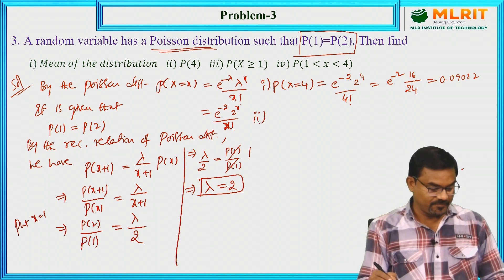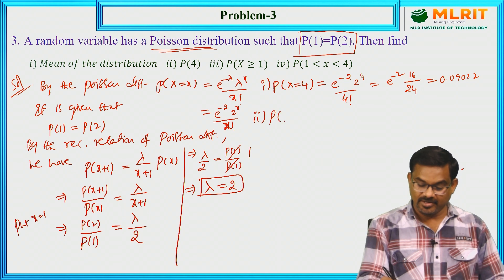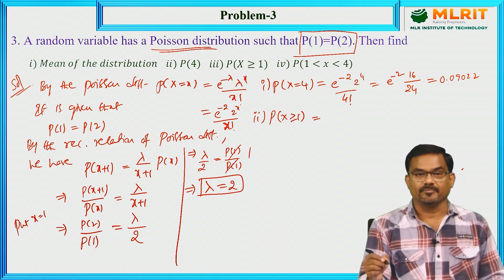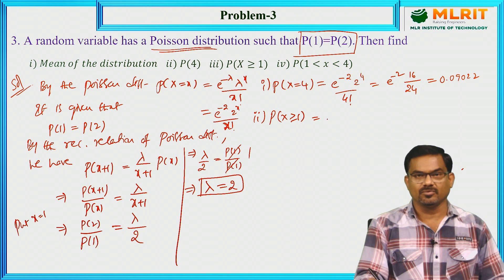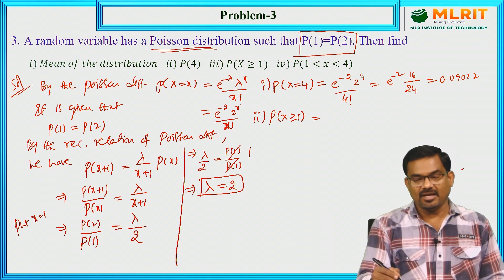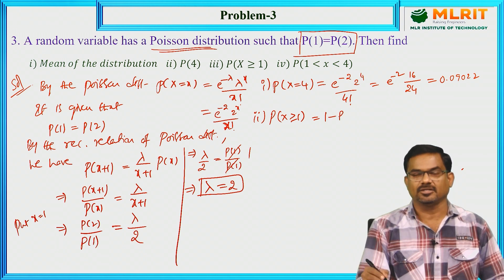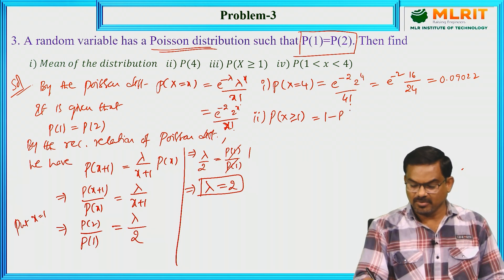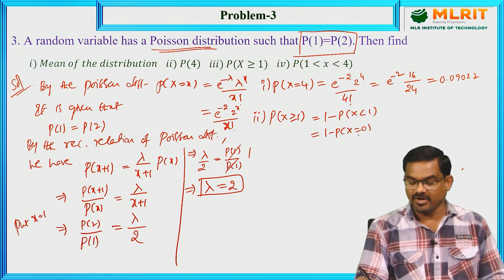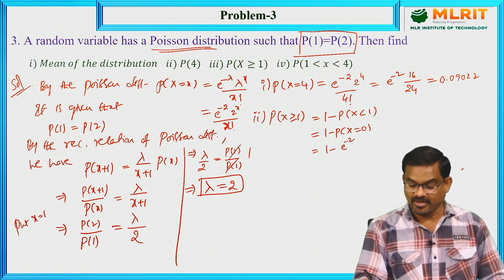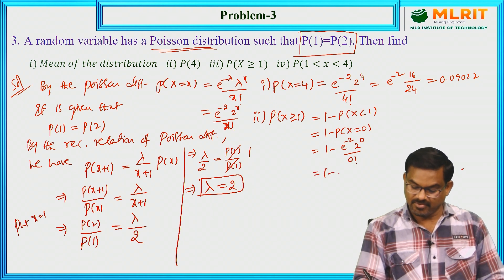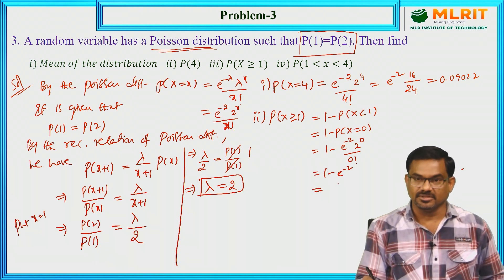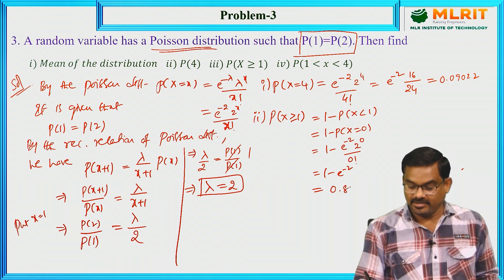The second question: P(X ≥ 1). Instead of finding all values ≥ 1, we use the property that total probability is unity: P(X ≥ 1) = 1 − P(X < 1). X less than 1 means only x = 0, so this becomes 1 − e^(−2) · 2^0 / 0! = 1 − e^(−2), which equals 0.8647.